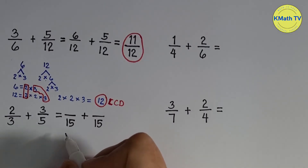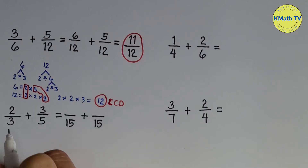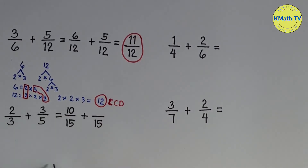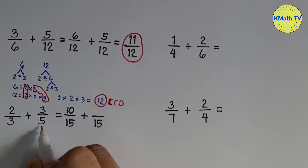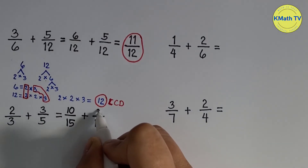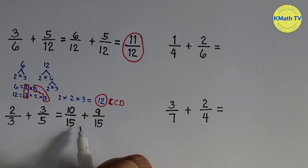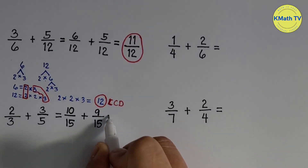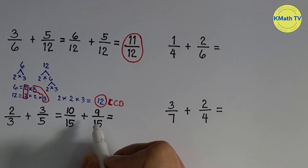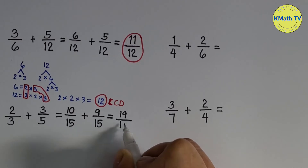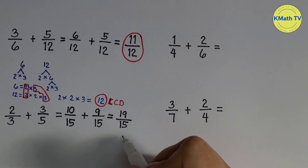Second step: get the equivalent fractions. 15 divided by 3 equals 5; 5 times 2 equals 10. Then 15 divided by 5 equals 3; 3 times 3 equals 9. The numerator of the second fraction is 9. These are the equivalent fractions — they are now similar fractions with the same denominators. Third step is to add: 10 plus 9 equals 19, and copy the LCD 15. The answer is 19 fifteenths.